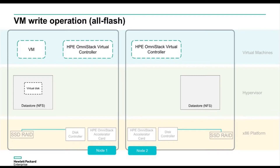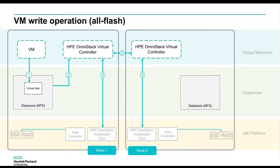The datastore presented from the virtual controller has a virtual disk for the VM. Below that we have the accelerator card used to process all the dedupe and compression, and the disk controller supporting the SSD RAID. As writes come down from the virtual machine, they get redirected through the NFS datastore to the virtual controller. The very first thing that virtual controller does is mirror the data over to the other virtual controller. That pairing happens per virtual machine at the time it's created, so in a cluster of four nodes, any VM could be paired across any combination of two nodes.